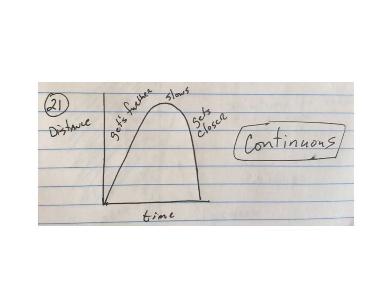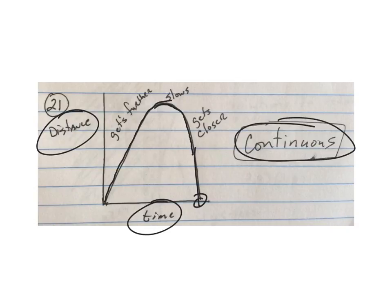On number 21, it's not really the path of the ball, it's really the distance versus time. As time goes by, the distance gets higher and higher, or further and further. Then, eventually, the distance that the ball is thrown starts to decrease, and it gets closer to the ground. And then, finally, the distance is 0. Notice, this is continuous, there are no breaks in the graph.